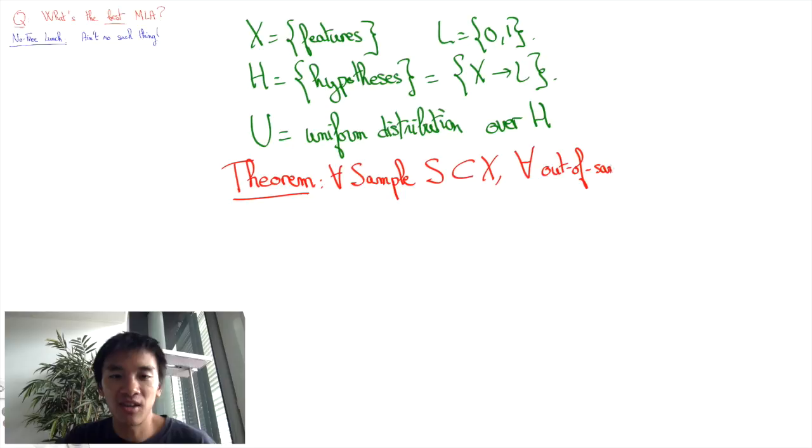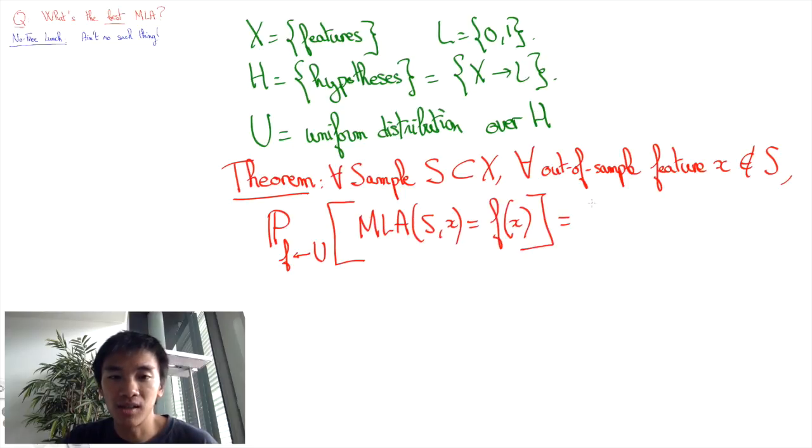Assume our machine learning algorithm MLA computed a prediction function MLA of S. Then, the No-Free-Lunch Theorem asserts that for any X that's not in the sample set, MLA of S does not achieve better prediction than random guess.